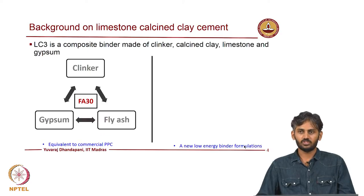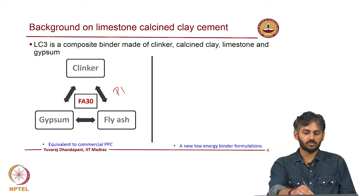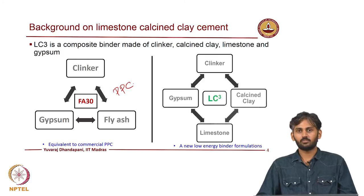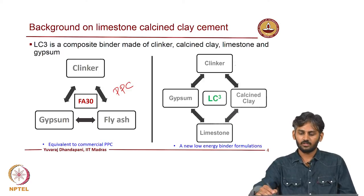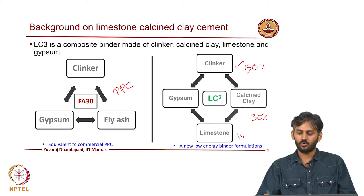A brief background before we start: Limestone Calcined Clay Cement is a composite binder made of clinker, calcined clay, limestone, and gypsum. Most of you would be aware that a typical blended cement — Portland Pozzolan Cement or PPC — available in the market is generally composed of clinker, fly ash, and gypsum. In this binder called LC3, clinker is the major component brought down to about 50 percent, calcined clay is about 30 percent, limestone is about 15 percent, and gypsum is typically about 5 percent.